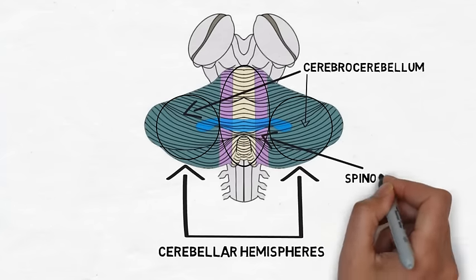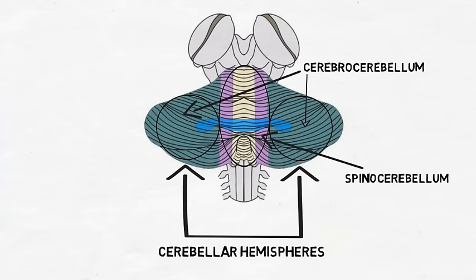The spinocerebellum receives information about limb position and touch and pressure sensations from the spinal cord. The spinocerebellum uses this information, for example, to compare where a limb is in space with where it should be if the movement were going as planned. If there is a discrepancy, the spinocerebellum can modify motor signals to correct any errors in the movement.